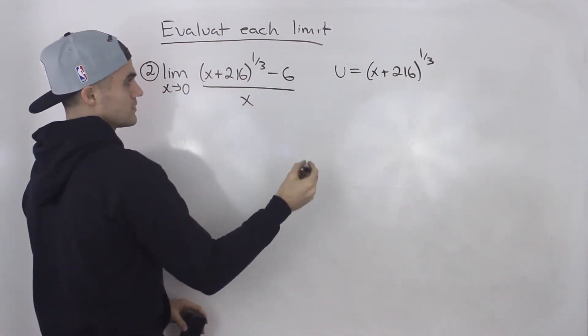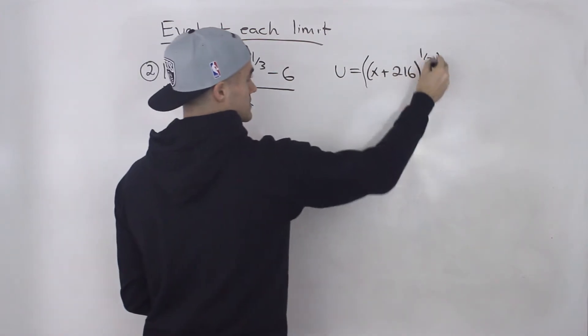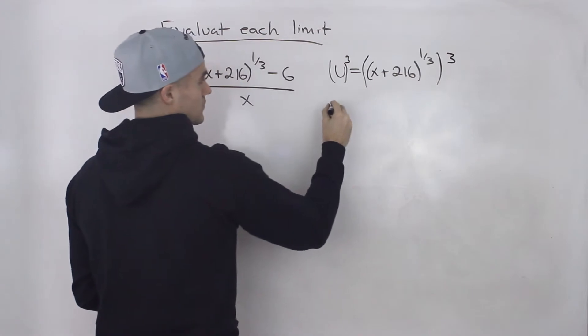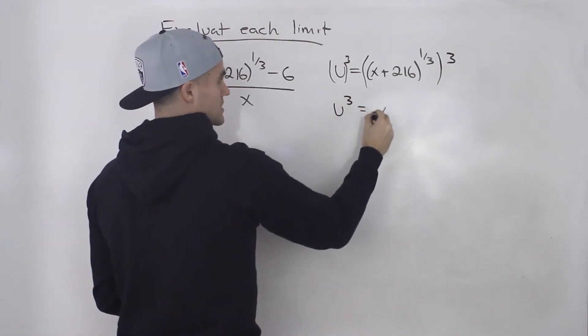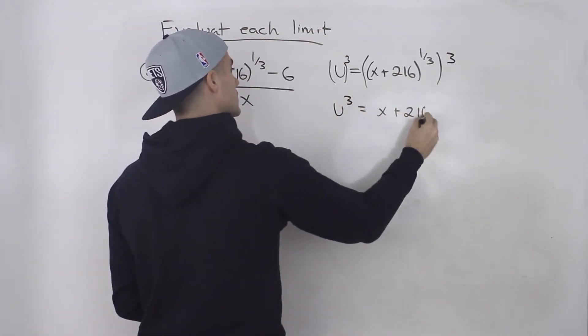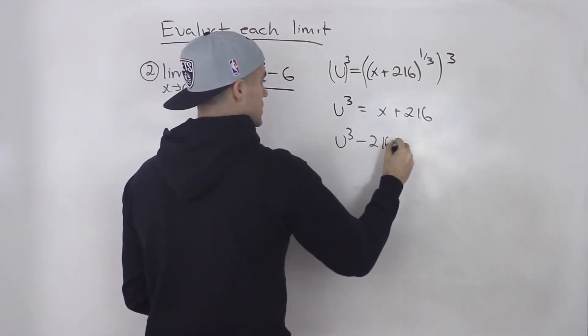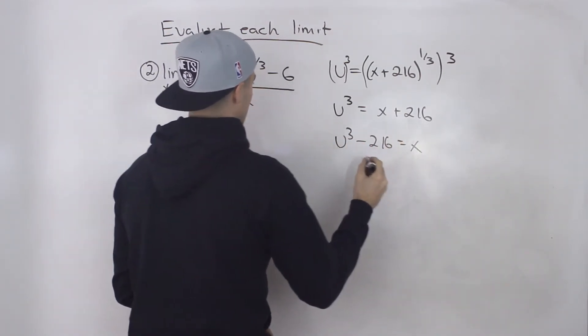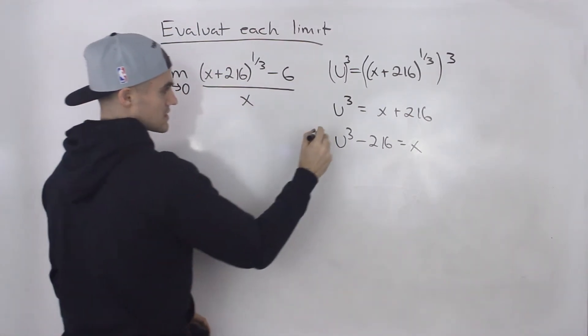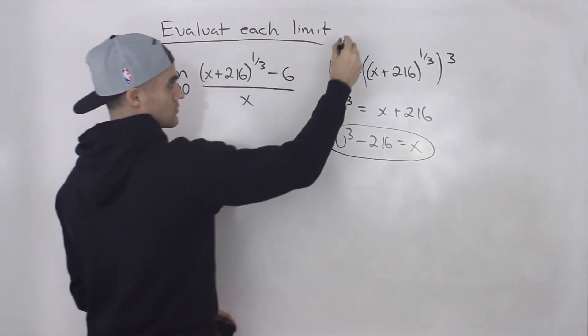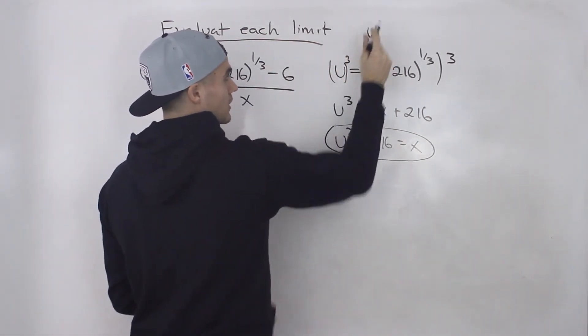So we let u equal that whole expression x plus 216 to the power of one over three. And then what we're going to do is we're going to take both sides to the power of three because we have to try to isolate for that x. So we'll have u to the power of three equals x plus 216. Bring the 216 over, we got u cubed minus 216 equals x.